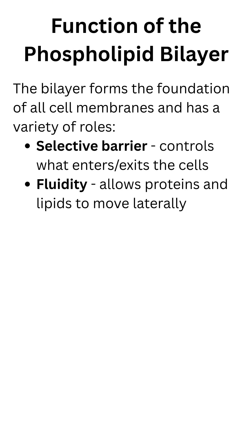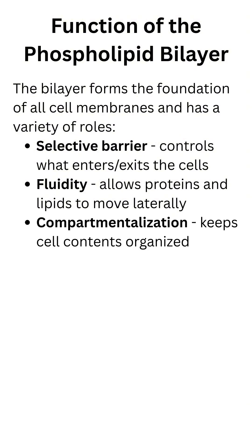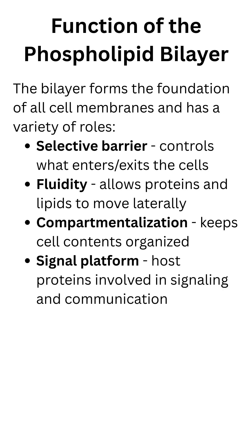This bilayer also allows proteins and lipids to move laterally, which enables dynamic cell processes. It helps to compartmentalize the cell so we can have multiple functions happening simultaneously — something that prokaryotic cells cannot do as efficiently. Importantly, the bilayer acts as a signaling platform. Molecules embedded in or attached to the membrane act as receptors or docking stations for things like hormones, neurotransmitters, and other signaling molecules.